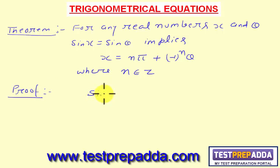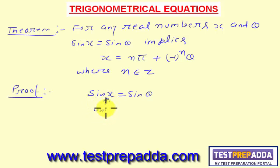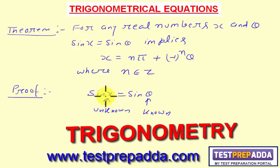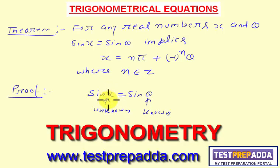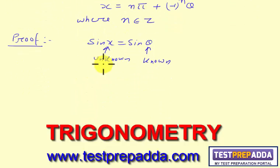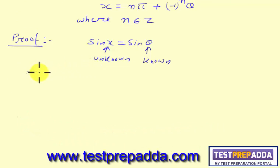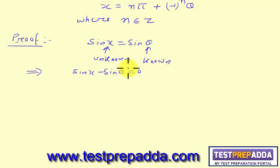First, what is given? The equation is sin x = sin θ. Here x is the unknown and θ is known. We have to find all possible values of this unknown angle x in terms of the known angle θ. This can be rewritten as sin x − sin θ = 0.